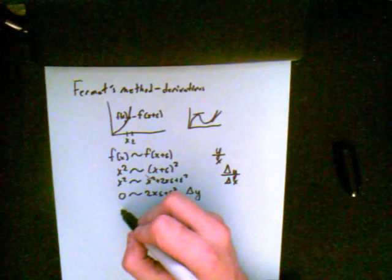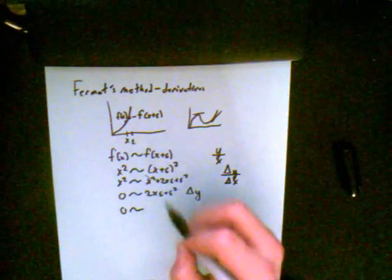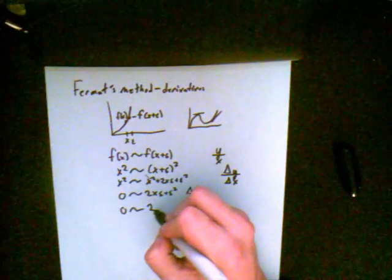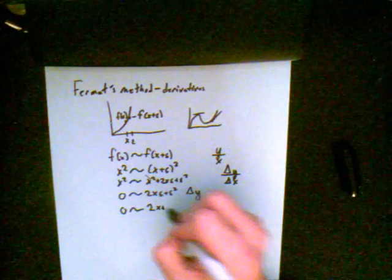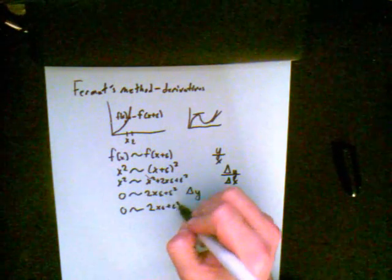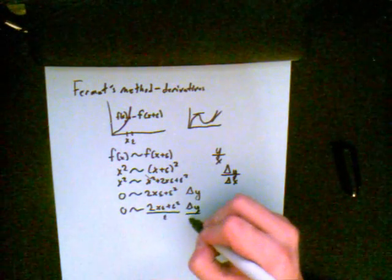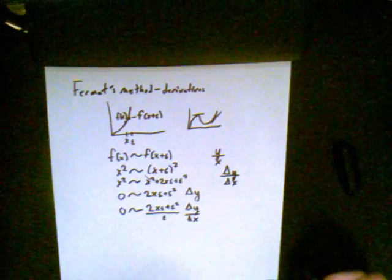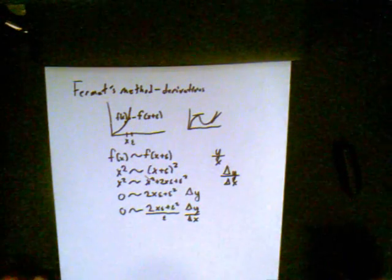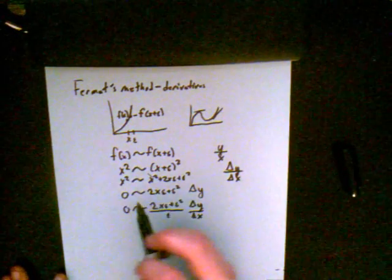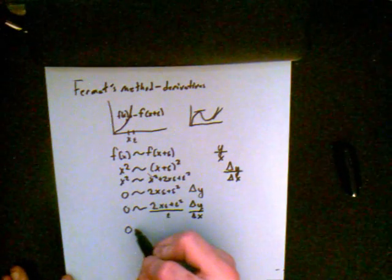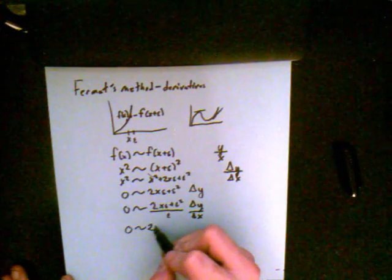So, now, Fermat divides through by epsilon. So, now we get 2x epsilon plus epsilon squared over epsilon. And that's delta y over delta x. Cancel out epsilon from both here. So, now 0 is going to be adequal to 2x plus epsilon.